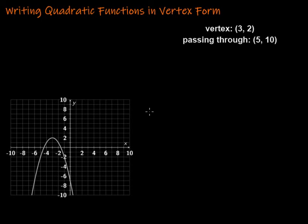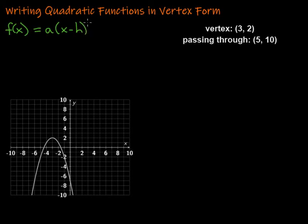In this video, we're going to take a look at writing quadratic functions given a graph or a vertex and another point that it's passing through. We're writing those things in vertex form. Since we're using vertex form, the first thing I need to do is remember what vertex form is. Vertex form is f of x equals a times the quantity x minus h squared plus k. The cool thing about vertex form is the vertex is sitting right there at h, k. We're going to use that to help us write an equation for the graph we're given here.